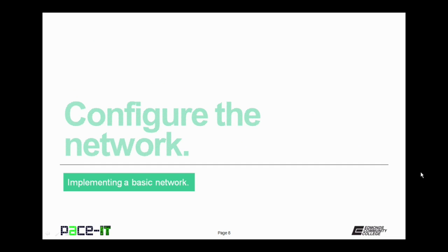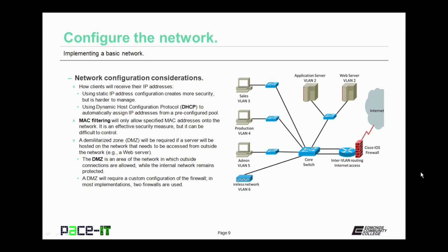Now let's talk about configuring the network. Here are some network configuration considerations. First, how will your clients receive their IP addresses? Using static IP address configuration creates a higher level of security, but it's harder to manage. You could use Dynamic Host Configuration Protocol (DHCP) to automatically assign IP addresses from a pre-configured pool, but your security may be a little bit lower if you do so.